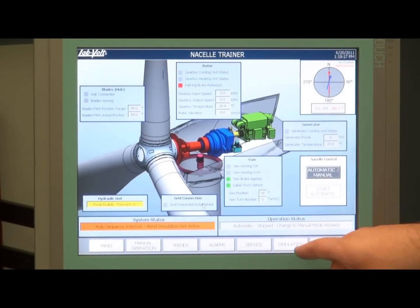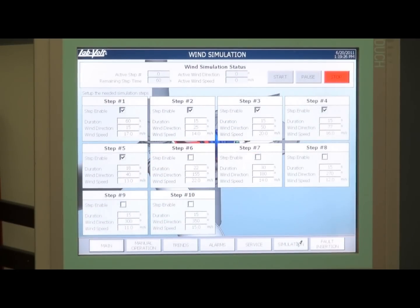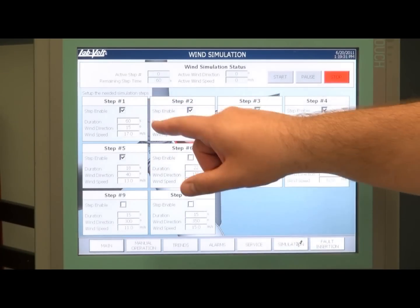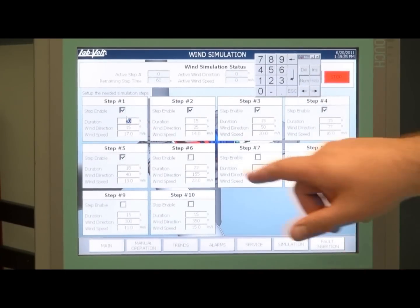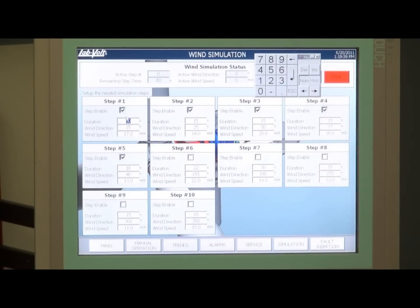The student has to enter a wind simulation path. Ten steps are programmed into the application. The student can select if the step is enabled or not, set the duration in seconds, set the wind direction, or set the wind speed in meters per second. The trainer can also be switched to imperial units.